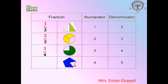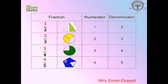What is the fraction here? The numerator is four and the denominator is five — four on top and five on the bottom. I colored four parts: 1, 2, 3, 4. The total parts are: 1, 2, 3, 4, 5. This fraction is called four fifths. Very good.